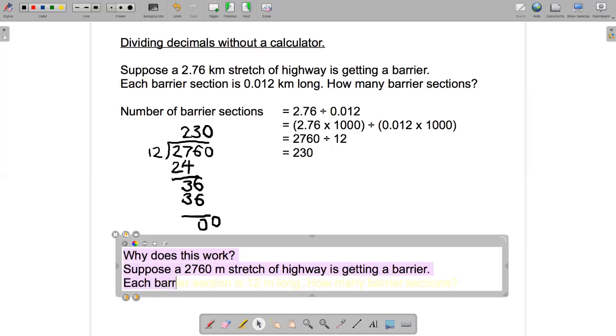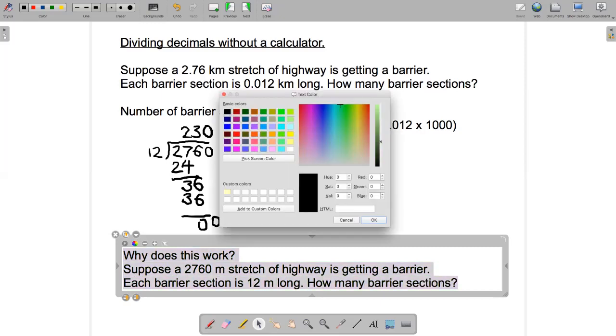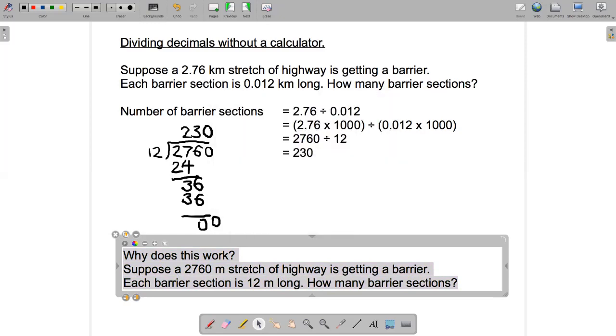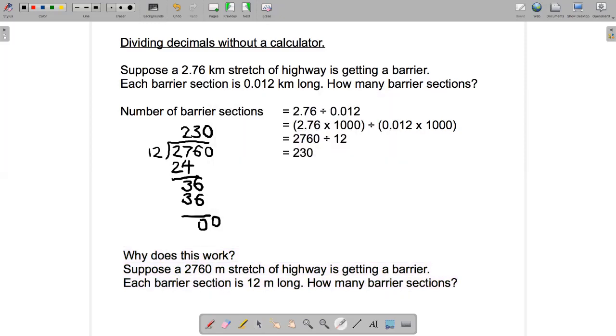Each barrier section, instead of saying 0.012 kilometers long, we'll say 12 meters long. Same thing. How many barrier sections? Well, we already solved that problem.